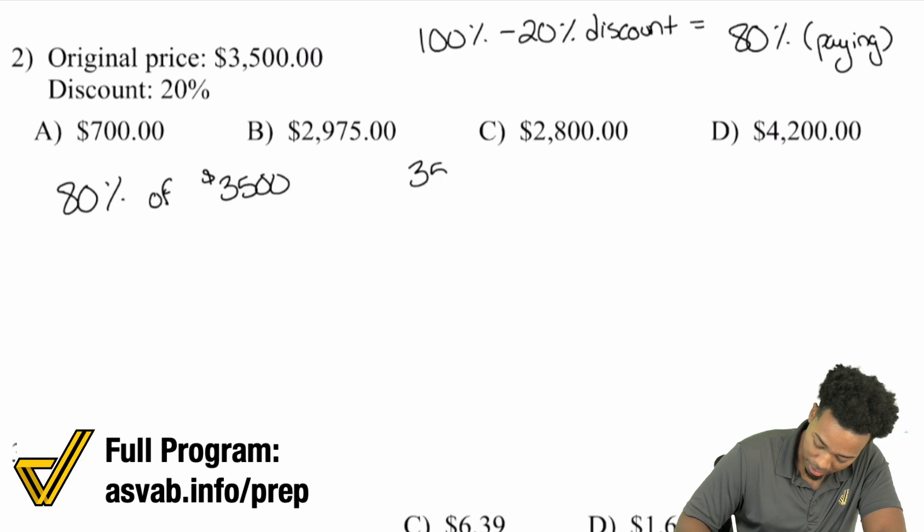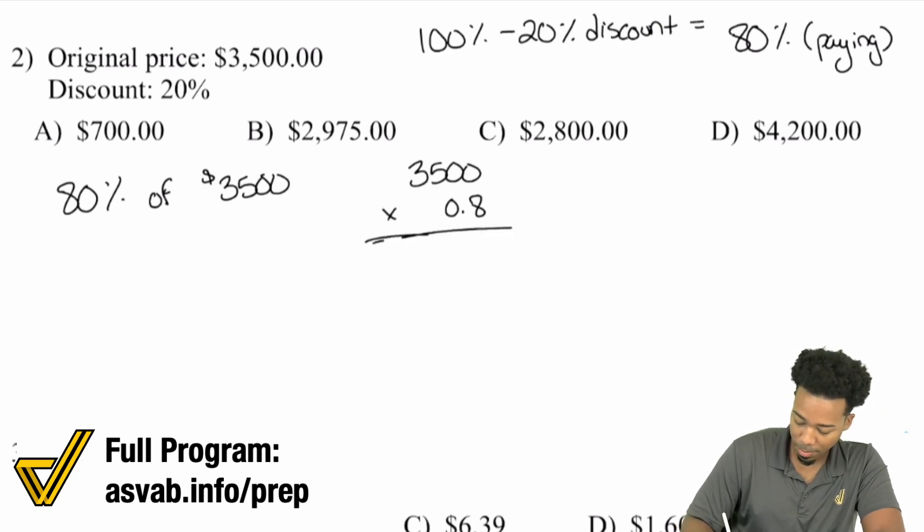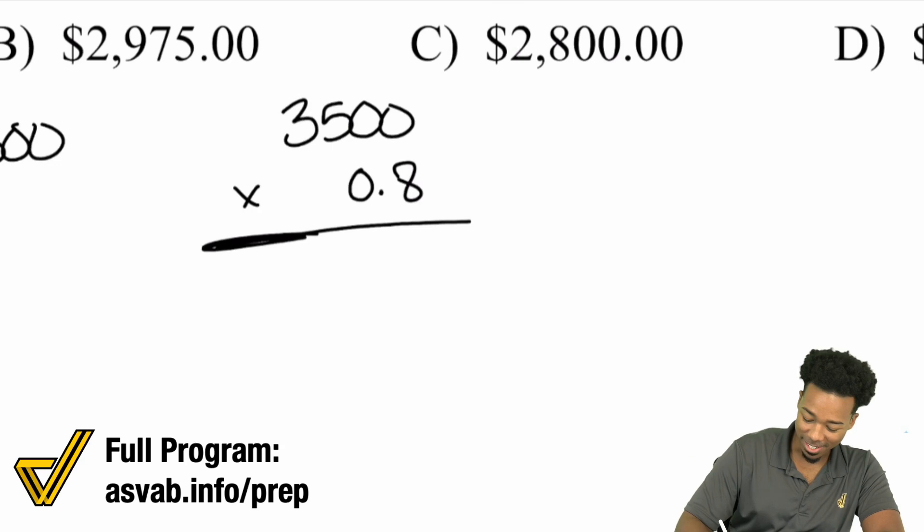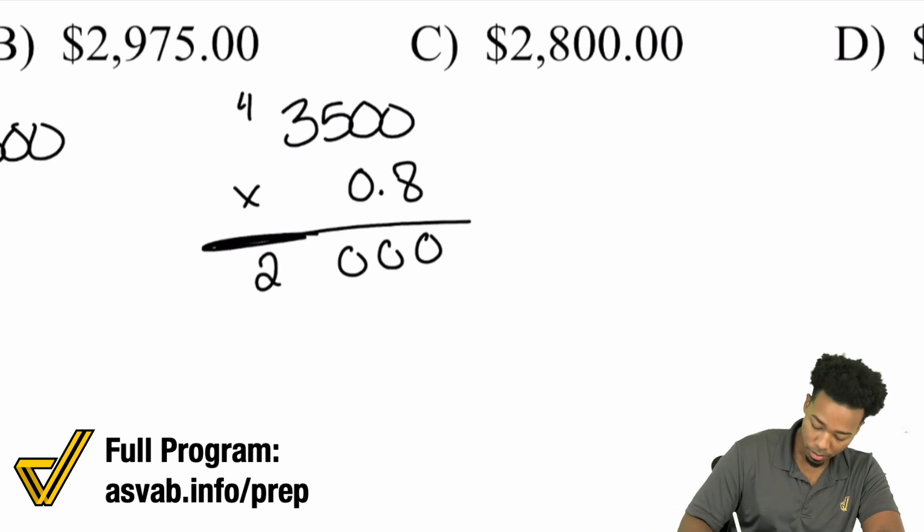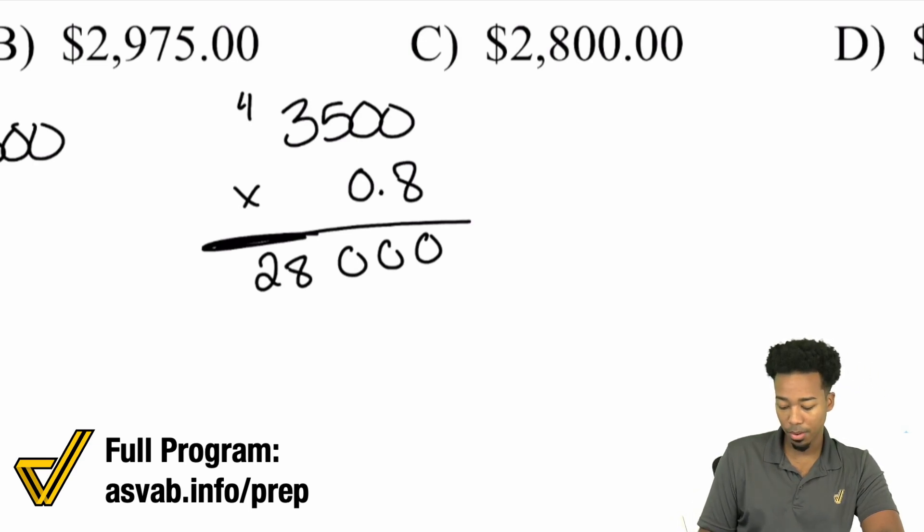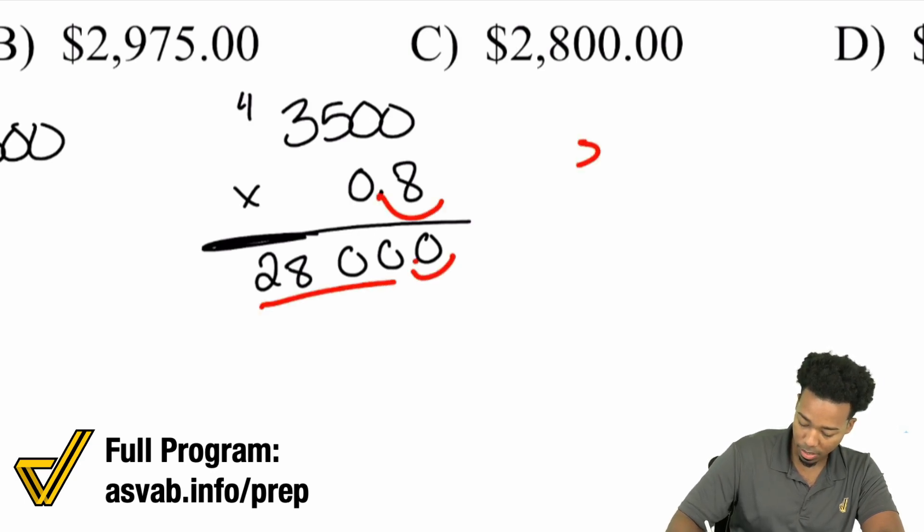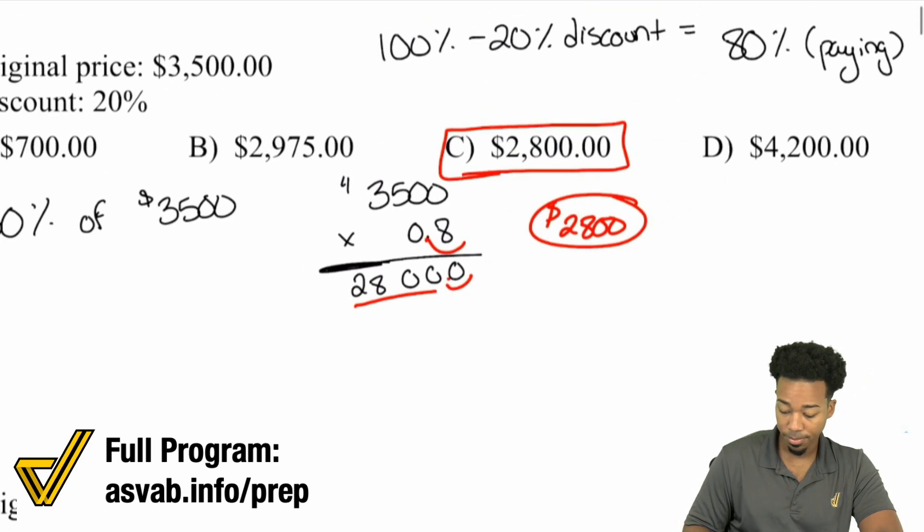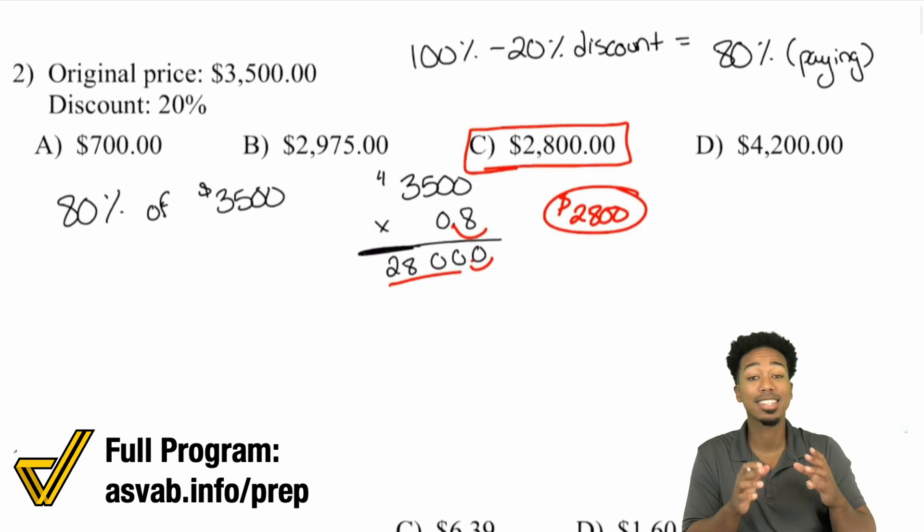Let's do the math: $3,500 times 0.8. 80% is 0.80, but you don't need the final zero. 0 times 8 is 0, 0 times 8 is 0, 5 times 8 is 40 carry the 4, 3 times 8 is 24 carry the 4 is 28. We have one decimal place, so the final price is $2,800. Answer choice C. It's that fast and straightforward as long as you understand how percentages work with markups and discounts.